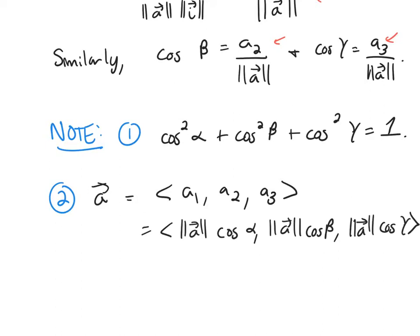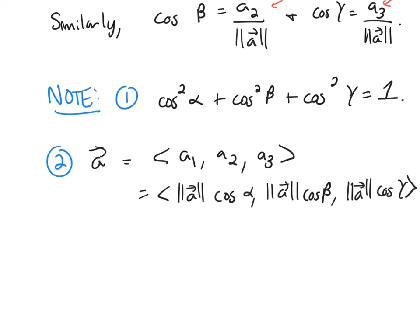And then if I notice here, these terms all have the magnitude of A in them or length of A, so I can factor that out: the length of A times cosine alpha, cosine beta, and cosine gamma.